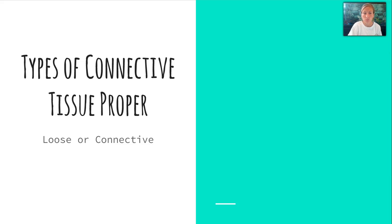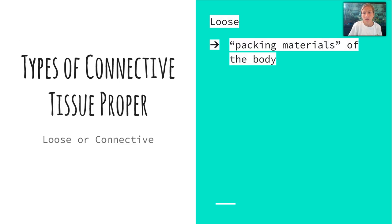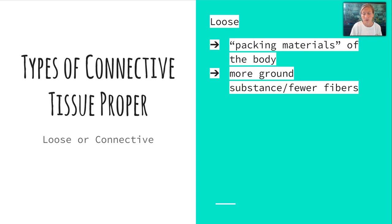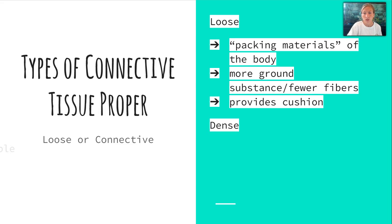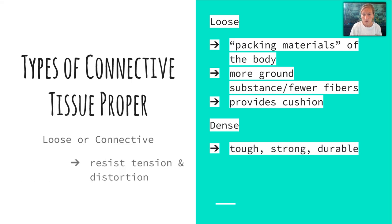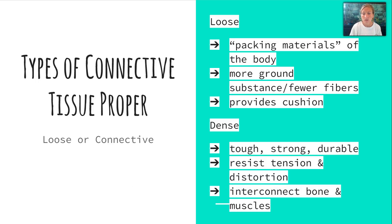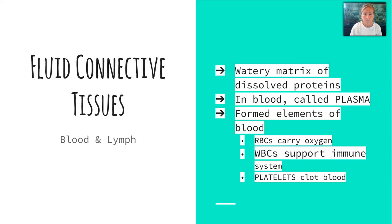There are multiple types of connective tissue proper. Loose connective tissue is like the packing material of the body — it has more ground substance but fewer fibers and provides cushion. Dense connective tissue is tough, strong, and durable, resists tension and distortion, and is interconnected with bone and muscles. Fluid connective tissues involve blood and lymph, with a watery matrix of dissolved proteins — in blood, we call that watery matrix plasma. The formed elements of blood include red blood cells, which carry oxygen to tissues; white blood cells, which support the immune system; and platelets, which help with blood clotting.